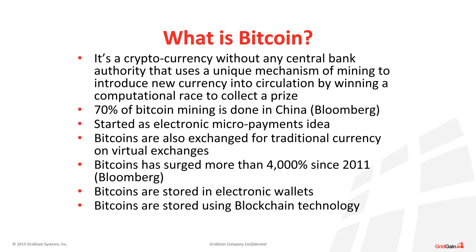So that's the reality. We need to do something about this. Let's talk about Bitcoin so we understand where the Bitcoin and blockchain idea comes from. Bitcoin is a cryptocurrency — a fully electronic currency without any central bank authority — that uses a mechanism called mining to introduce new currency into circulation. There's no central bank that says we'll add more or take liquidity out of the financial system. Instead, you perform certain tasks and as a result collect a small amount of Bitcoins — that's how new Bitcoins are introduced.